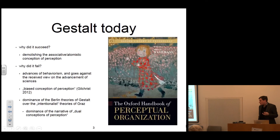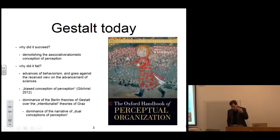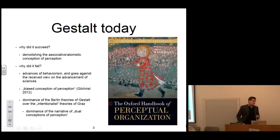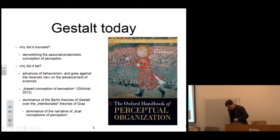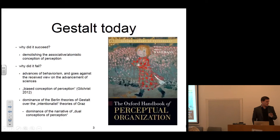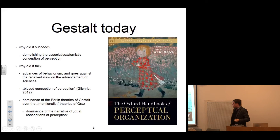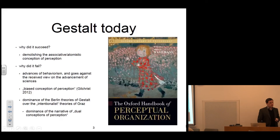Because of this success, the narrative that Gestalt theory goes against the received view of a dual conception of perception became the dominant narrative in the history of Gestalt. People today, including Wagemans himself, would be happy to say that the basic characteristic of Gestalt theory, and why it is interesting, is precisely because it goes against the dual conception of perception — according to which we would have first sensory contents and built upon these contents a perception of the forms. From an historical point of view, Gestalt theory has today a limited extension.